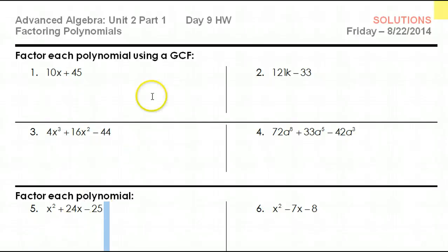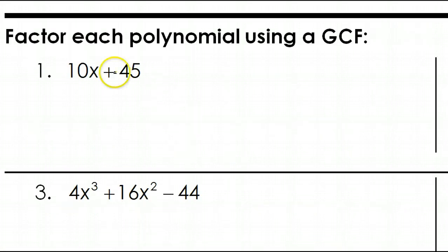All right, this lesson is all about factoring. We're going to factor by pulling out a greatest common factor, and we're going to factor trinomials, which will almost always factor as a binomial times a binomial. I apologize in advance, I'm losing my voice a little bit.